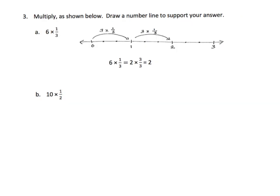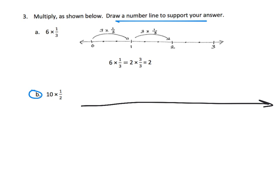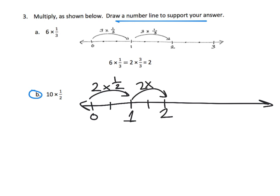Now we're going to speed things up a little by drawing a number line. Let's do problem B. So here's zero, and we know that for every two halves that equals one whole. Here's a half and here's a second half — that is one whole. So two times one-half gives us a whole. Here's a half, here's another half — so there's two, that's another two times one-half.